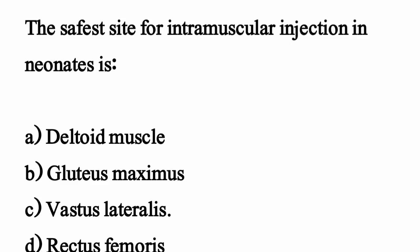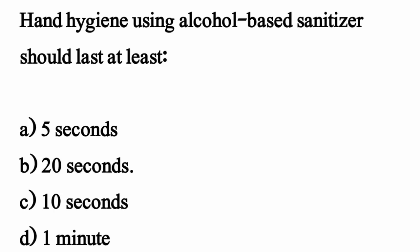The safest site for intramuscular injection in neonates is? The correct option is option C: Vastus lateralis. Hand hygiene using alcohol-based sanitizer should last at least? The correct option is option B: 20 seconds.